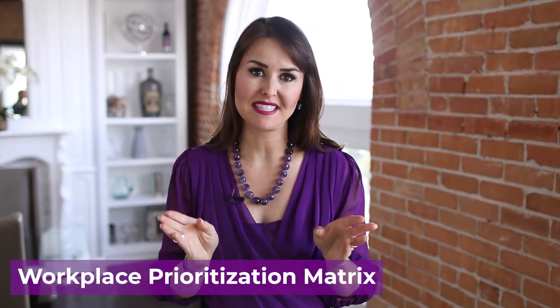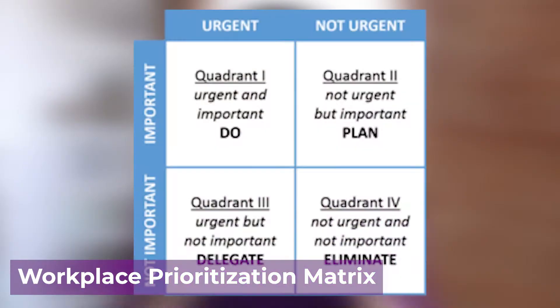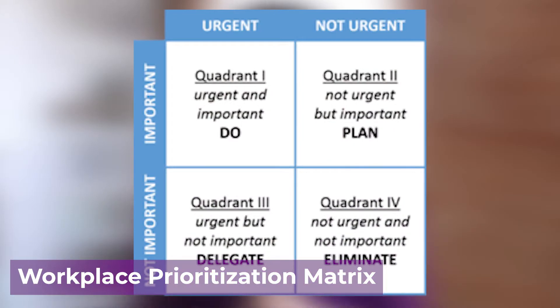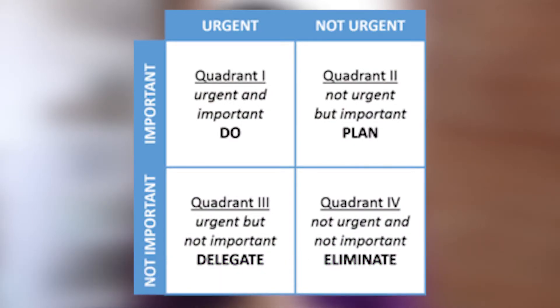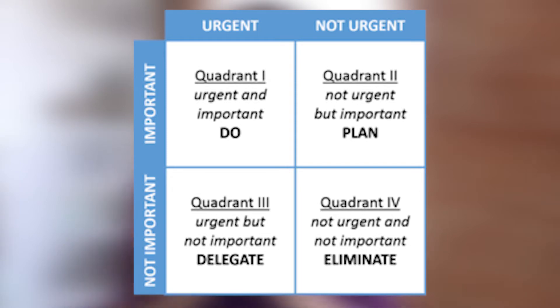One of the first tools that most people use — and you've probably seen this 2 by 2 matrix before — is the workplace prioritization matrix. I'm going to show that matrix here on the screen. What this matrix does is it is a way for you to categorize all of the tasks on your list on two spectrums. The first is importance and the second is urgency.